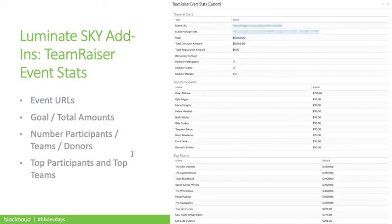Here's a larger and more complete view of that tile. Data here can include event URLs, goals, total amounts, number of participants, donors, teams, and top participants and teams. You can view all this on your record right within Razor's Edge NXT without having to go into Team Raiser itself — very beneficial for those whose main focus is on the development area and working within Razor's Edge. They don't have to go over to Luminate Online and Team Raiser to see that data.